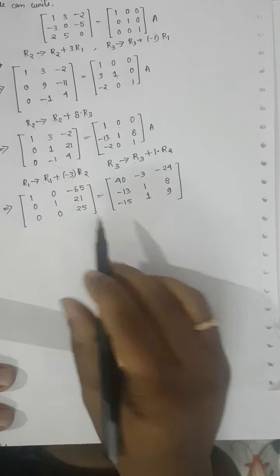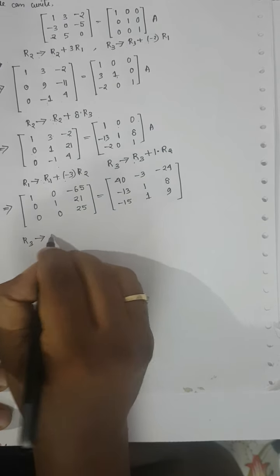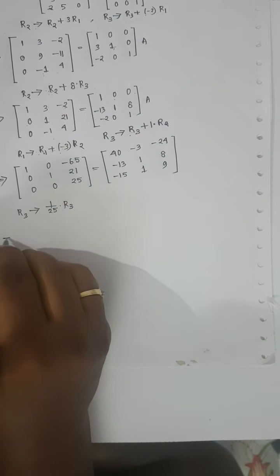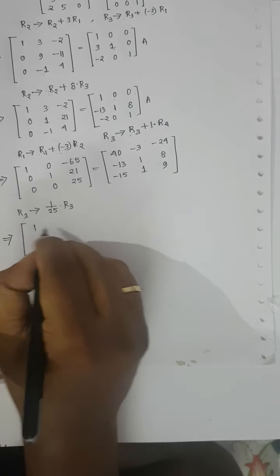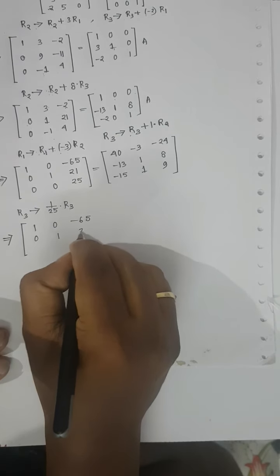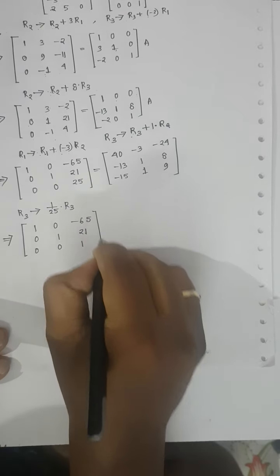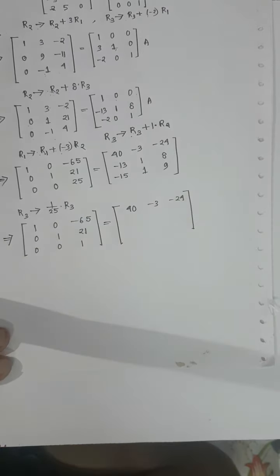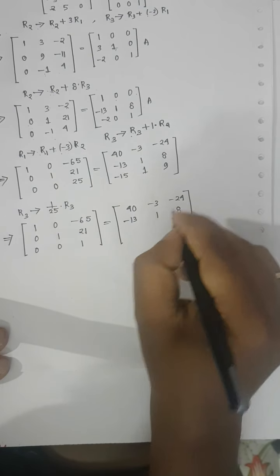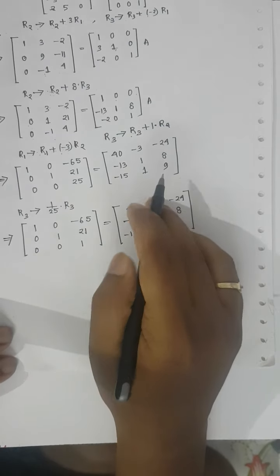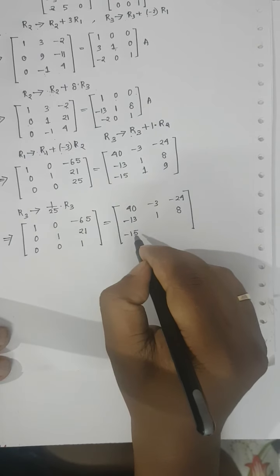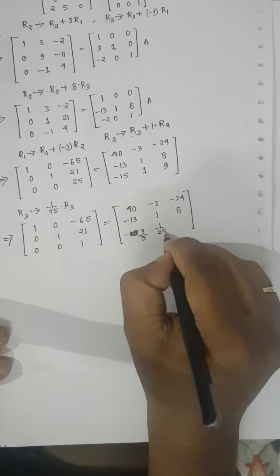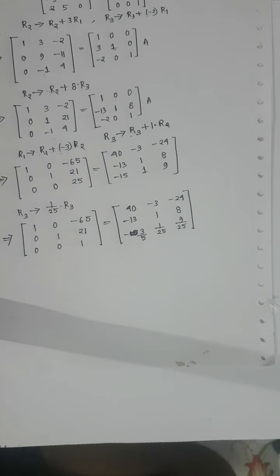Our main motto is to make A₃₃ equal to 1. Write R3 → (1/25)·R3. Dividing row 3 by 25: the left side gives [0, 0, 1]. On the right side: −15/25 = −3/5; 1/25; 9/25. So row 3 right becomes [−3/5, 1/25, 9/25].